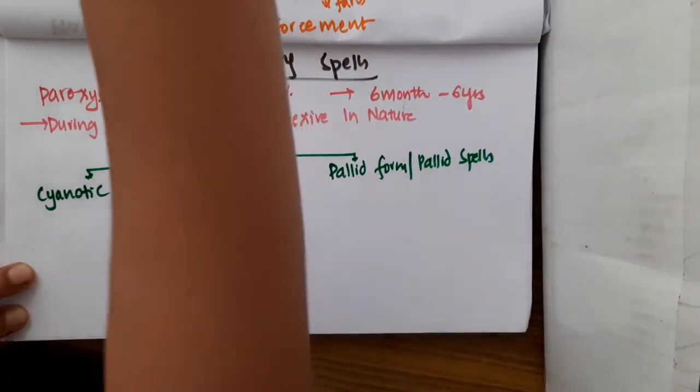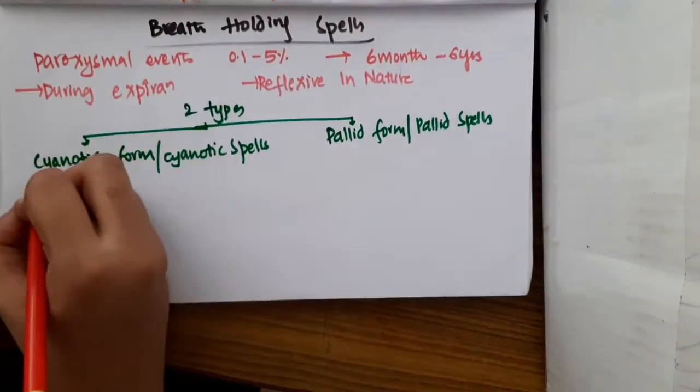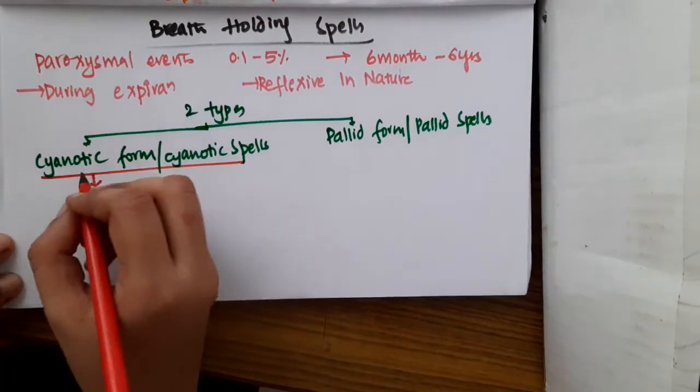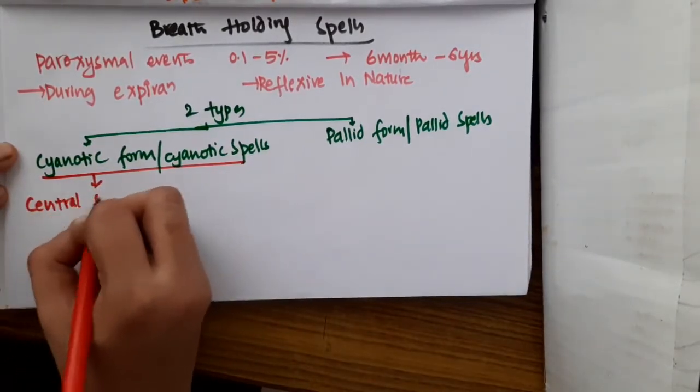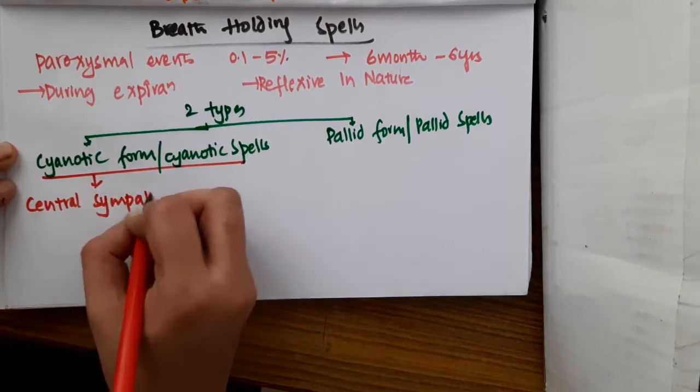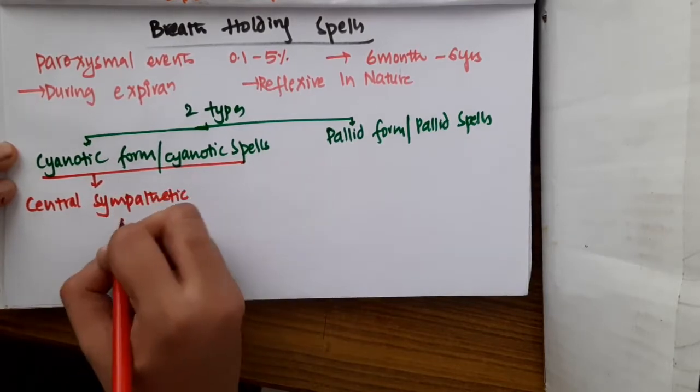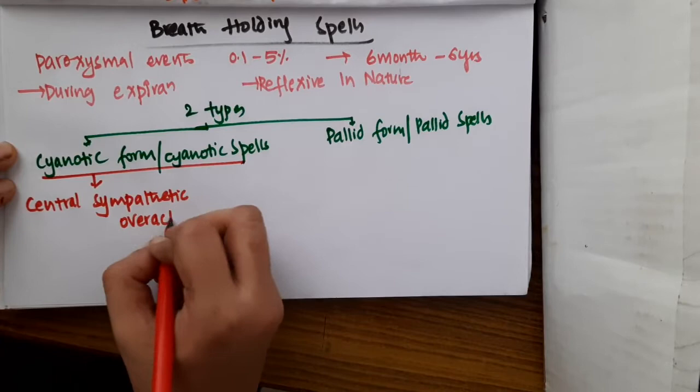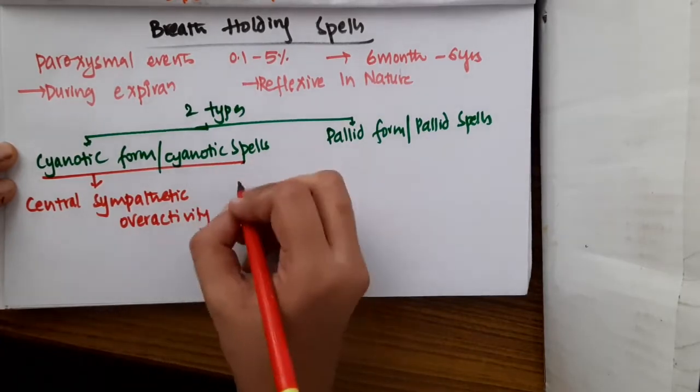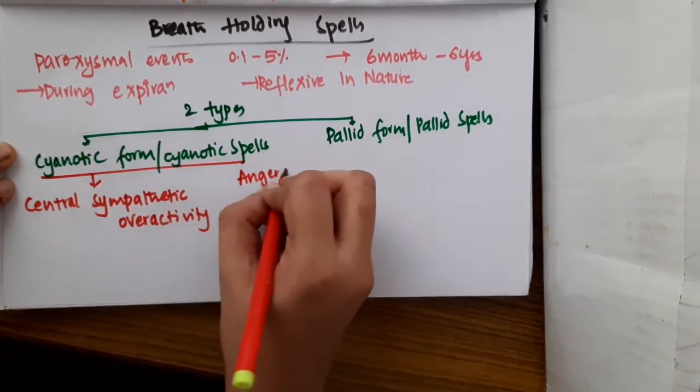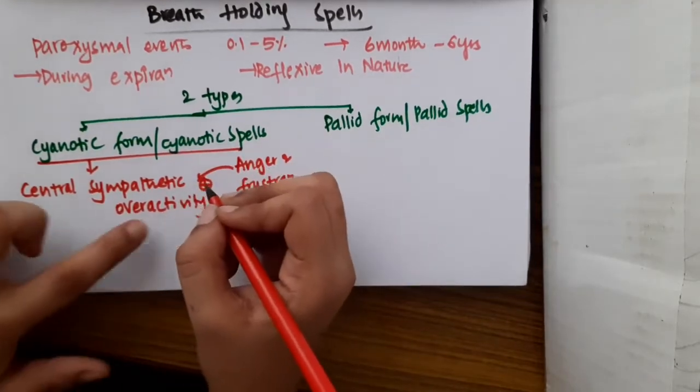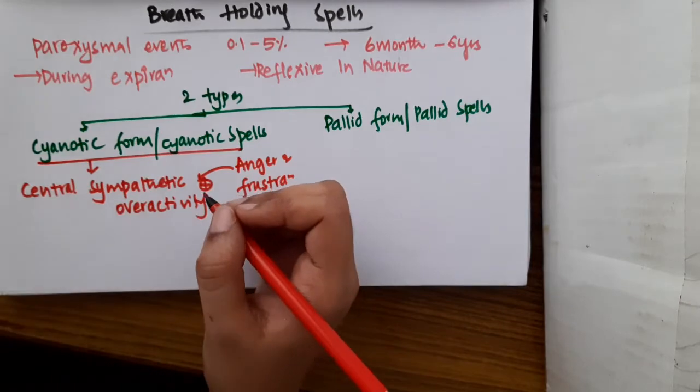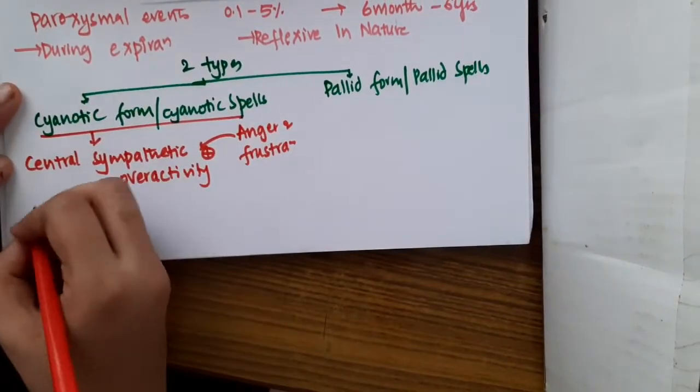So what do you see in cyanotic spells? In cyanotic spells you will see that this is mainly due to the activation of central sympathetic overactivity. Whenever the parents scold the child, the child becomes anxious, the child will have anger and frustration.